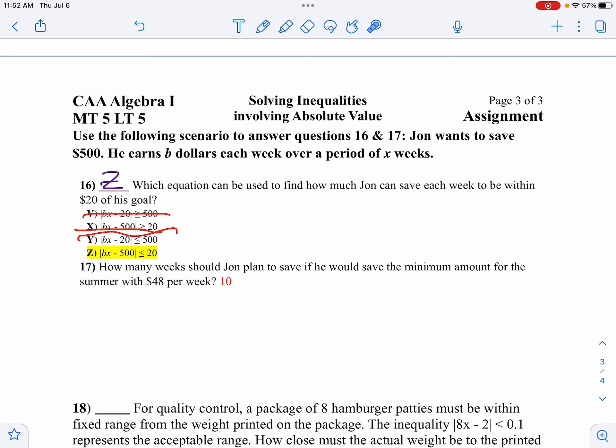And then in 17, let's solve that inequality. So to split, to get rid of the absolute value, since it's less than, I'll go in between. So I'm going to go negative 20 is going to be less than or equal to, we're going to make $48 per week. So 48X minus 500 is less than or equal to $20.